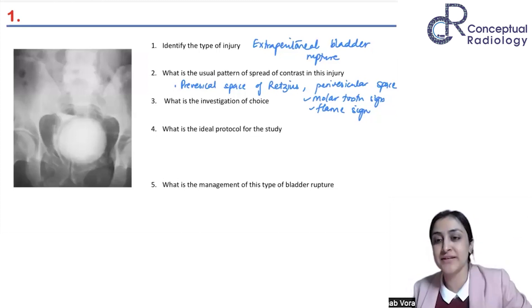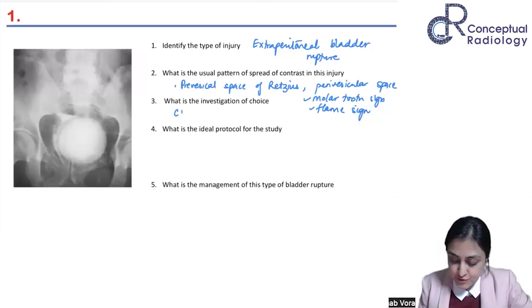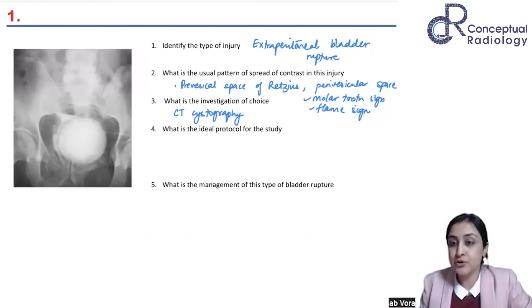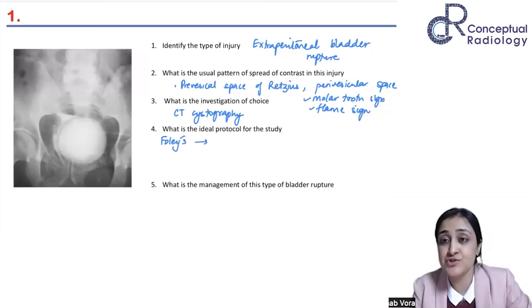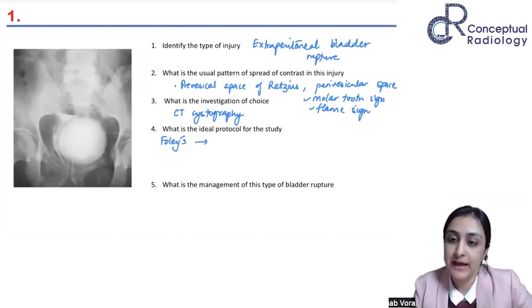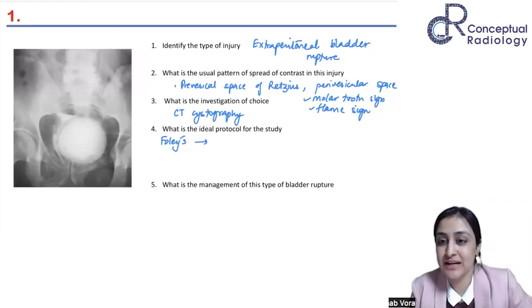Always write in bullet points in any exam — whether theory or OSCE — so the examiner knows you have clarity of thought. When you know the answer, go bullet-point wise. Third question: what is the investigation of choice? Correct — it is CT cystography. CT cystography is the investigation of choice for evaluation of bladder trauma. What is the ideal protocol for the study? First, the patient will need a Foley catheter.